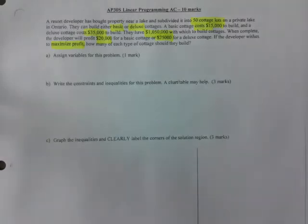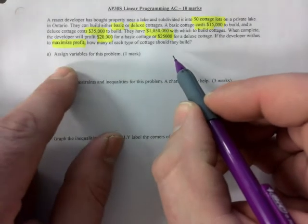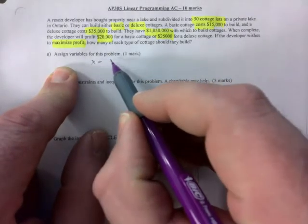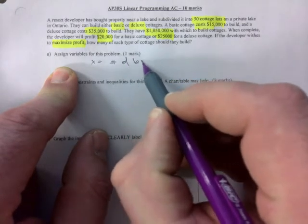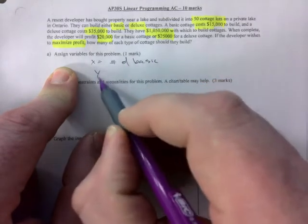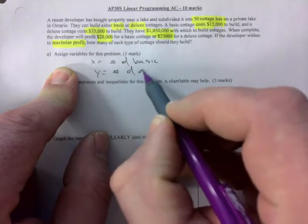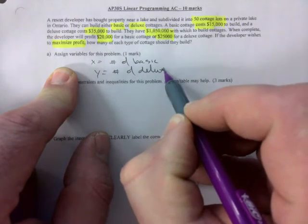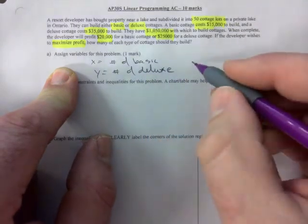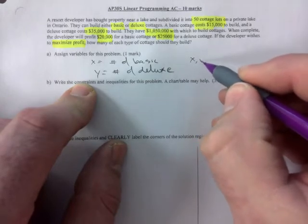If the developer wishes to maximize profit, that should tell you this is going to be an objective optimization type of scenario where you're going to have to come up with an objective function. So the variables would be x would be the number of basic cottages, y would be the number of deluxe.